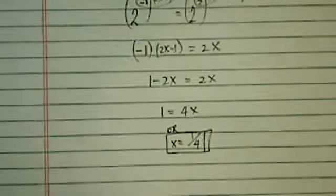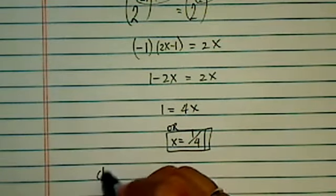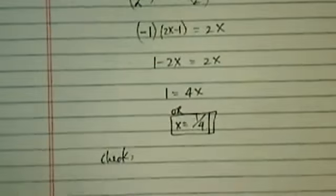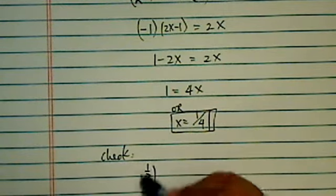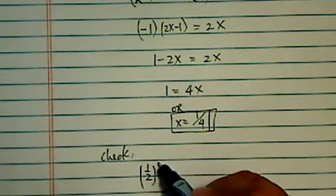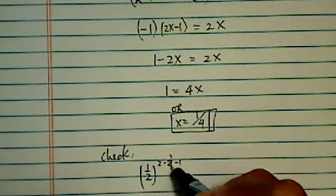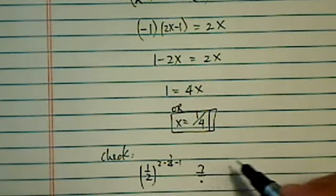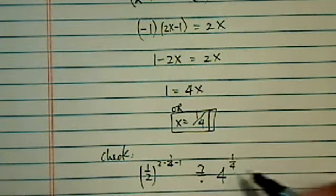Okay. Now let's make sure the work actually fits in our original equation. Let's try it. 1/2 to the 1/4 times 2, so 2 times 1/4 minus 1, is this true? It's equal to 4 to the 1/4 power.